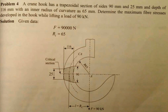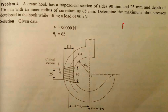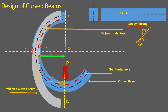Problem: A crane hook has a trapezoidal cross-section with sides 90 mm and 25 mm and a depth of 116 mm, with a radius of curvature of 65 mm. Determine the maximum fiber stresses developed in the hook while lifting a load of 90 kN. Note that L is the distance from the centroidal axis, not the neutral axis, because the bending moment acts at the centroidal axis.